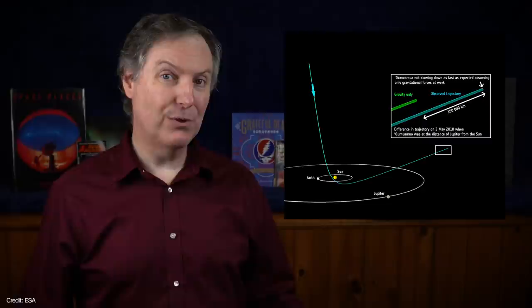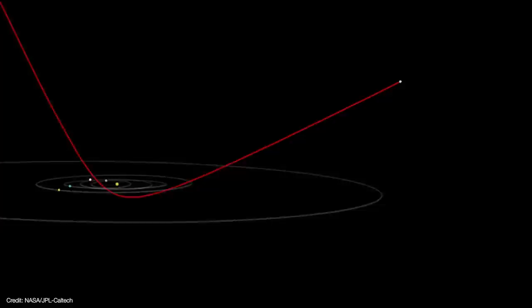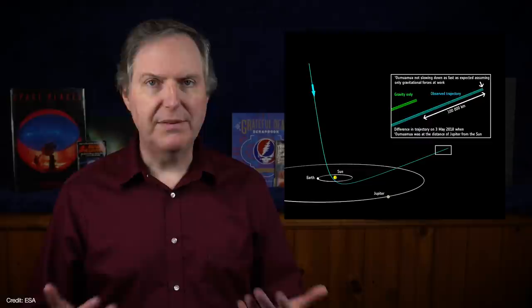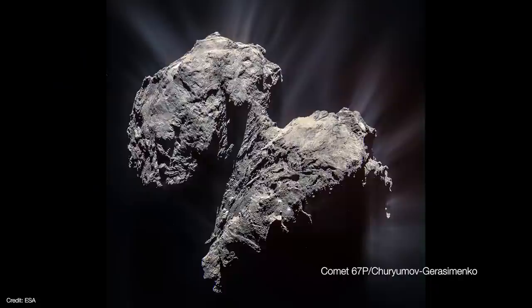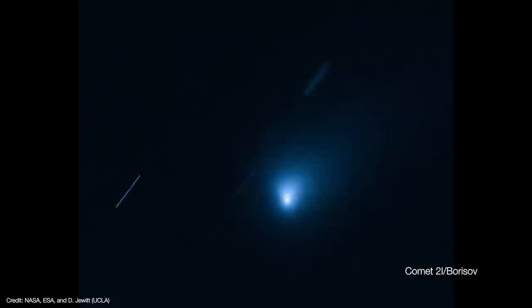But the weirdest thing about Oumuamua was that it actually gained acceleration as it was leaving the solar system. Now, to be clear, Oumuamua was slowing down as it was escaping the sun's gravity. But it wasn't slowing down enough. And it was also moving off of its predicted course as if something were pushing on it. This extra push is called non-gravitational acceleration. It's fairly common with comets, which emit jets of gas and dust when warmed by the sun. These jets act as low-thrust rockets and give comets a little extra push.